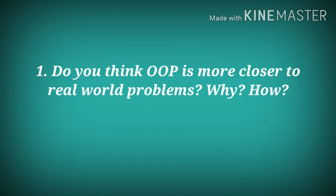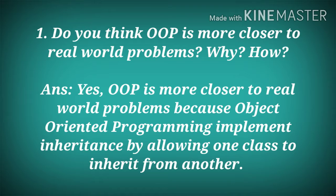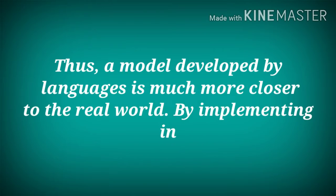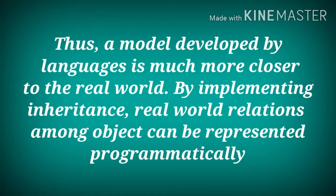Question number one: Do you think OOP is more closer to real world problems? Why? Answer: Yes, OOP is more closer to real world problems because object-oriented programming implements inheritance by allowing one class to inherit from another. Thus, a model developed by languages is much more closer to the real world. By implementing inheritance, real world relations among objects can be represented programmatically.